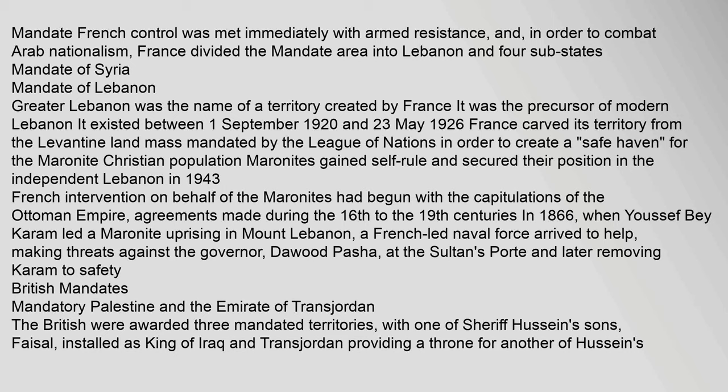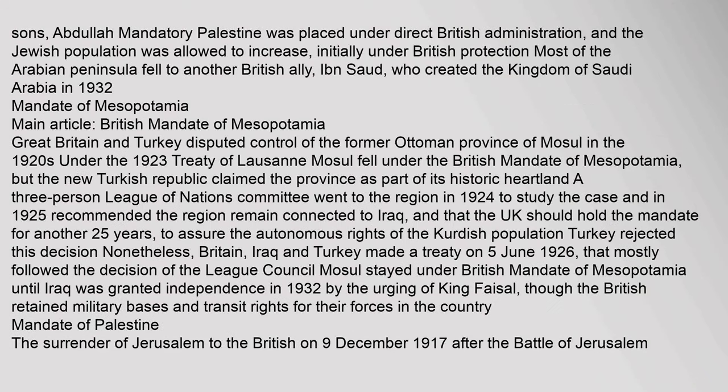British Mandate: Mandatory Palestine and the Emirate of Transjordan. The British were awarded three mandated territories, with one of Sheriff Hussein's sons, Faisal, installed as King of Iraq, and Transjordan providing a throne for another of Hussein's sons, Abdullah. Mandatory Palestine was placed under direct British administration, and the Jewish population was allowed to increase. Initially under British protection, most of the Arabian Peninsula fell to another British ally, Ibn Saud, who created the Kingdom of Saudi Arabia in 1932.